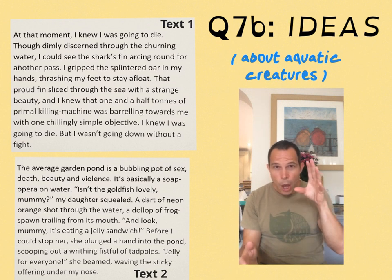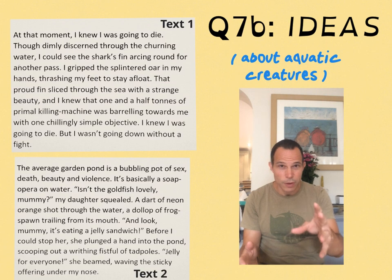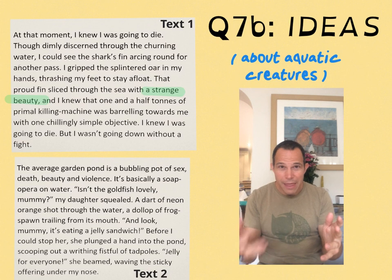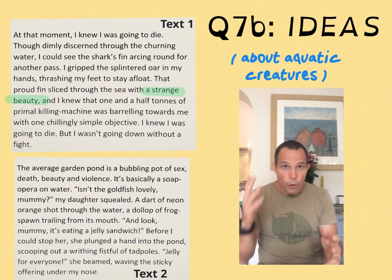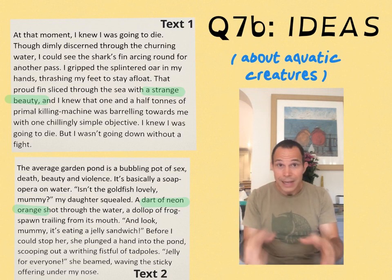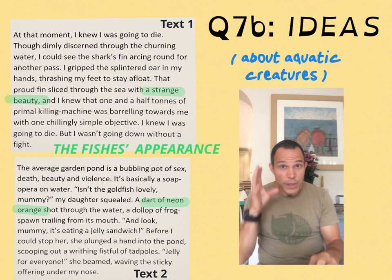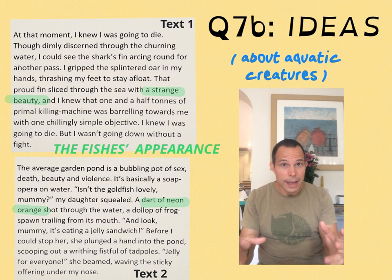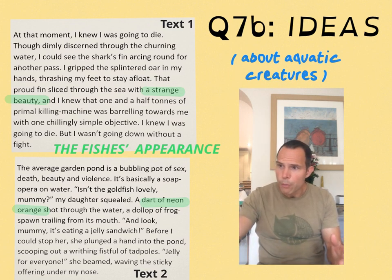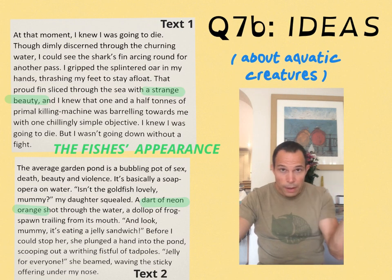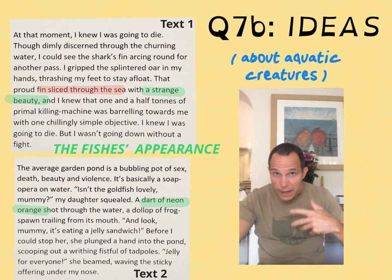In Text One we've got a reference to the appearance of the shark's fin — it's described as a 'strange beauty.' In Text Two, relating to appearance, you've got the 'neon dart of the goldfish.' That's appearance — bing! We've got our first connection, which we can go on to analyze: how these creatures look. That's our first idea.